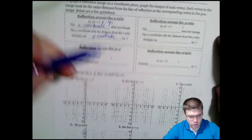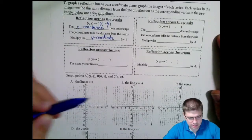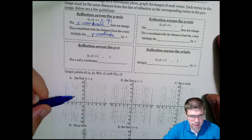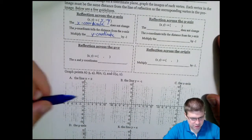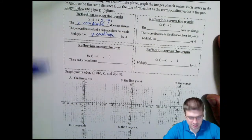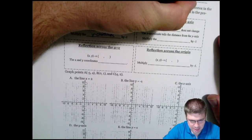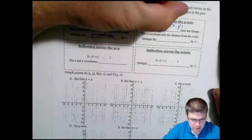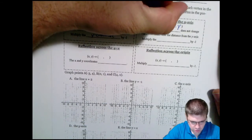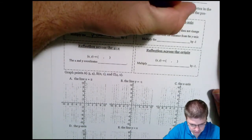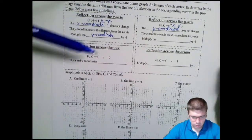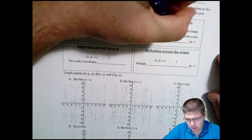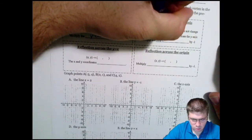Similarly, reflecting across the Y-axis: our Y coordinate will not change, and our X coordinate will move horizontally — it will be the opposite sign. So the Y coordinate stays the same, and the X coordinate gets that distance from the Y-axis, then we go that distance out the other way — we multiply that X coordinate by negative one.